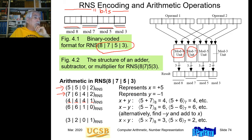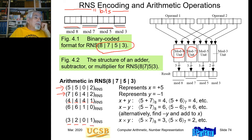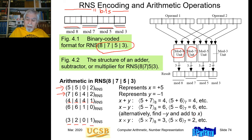It also works for multiplication. 5 times 7 is 35, which is 3 mod 8. 5 times 6 is 30, which is 2 mod 7. 0 times 4 is 0. And 2 times 2 is 4, which is 1 mod 3. This should be the product of the two numbers: +5 times −1 should be −5. You can verify that this is a representation of −5. So addition, subtraction, and multiplication are done independently on the moduli, and therefore they are much faster than the corresponding algorithms for binary or decimal. This is the main advantage of residue number systems.